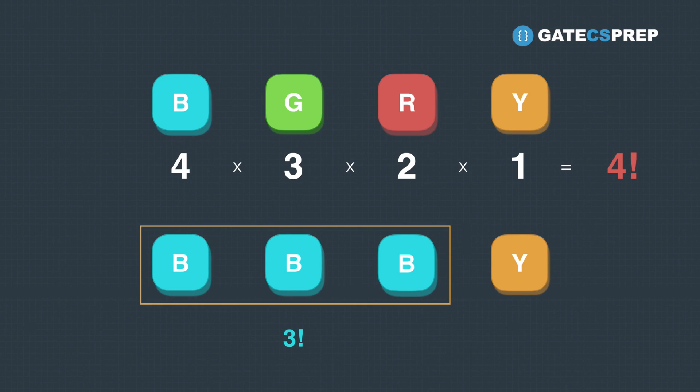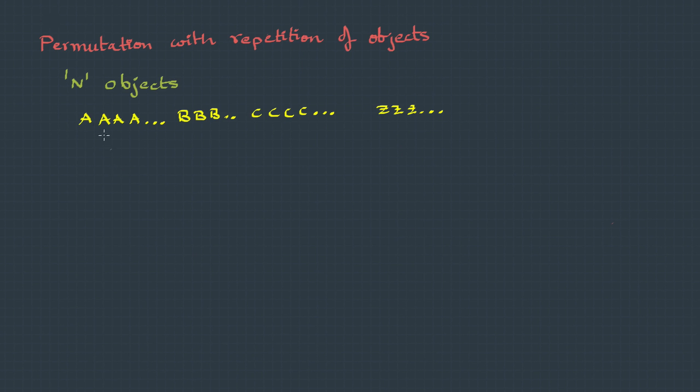So this three factorial is removed from the four factorial. So four factorial is formed because of the product, so when I have to remove it I'll go with the reverse operation which becomes division. Therefore the number of permutations of four objects where three objects are same is four factorial by three factorial.